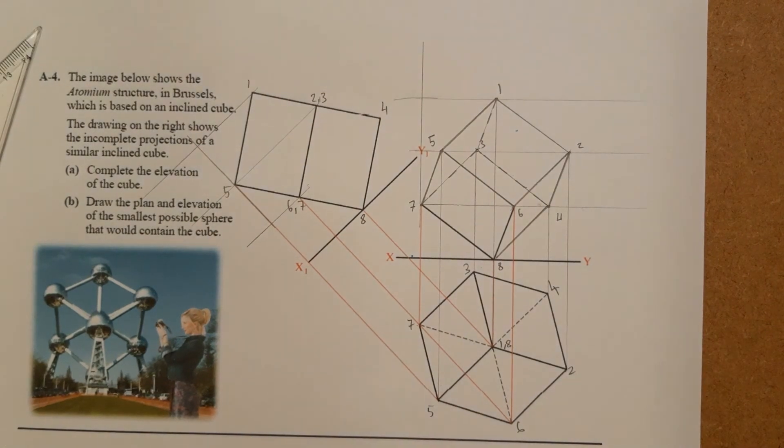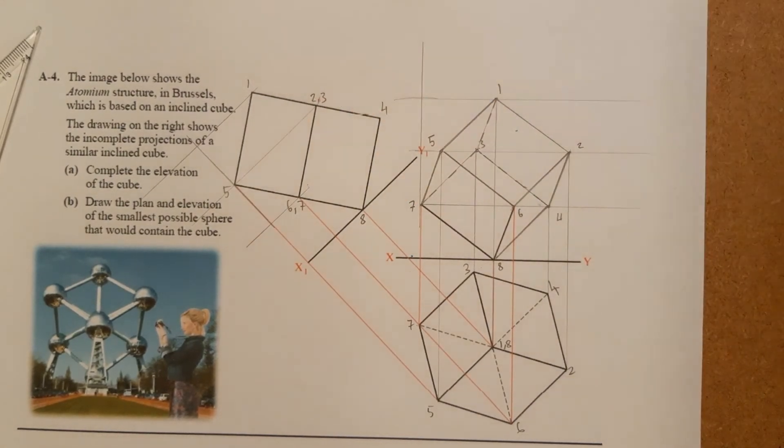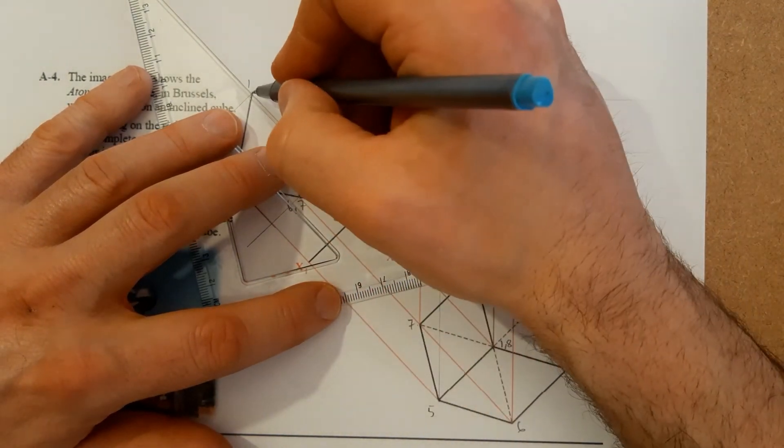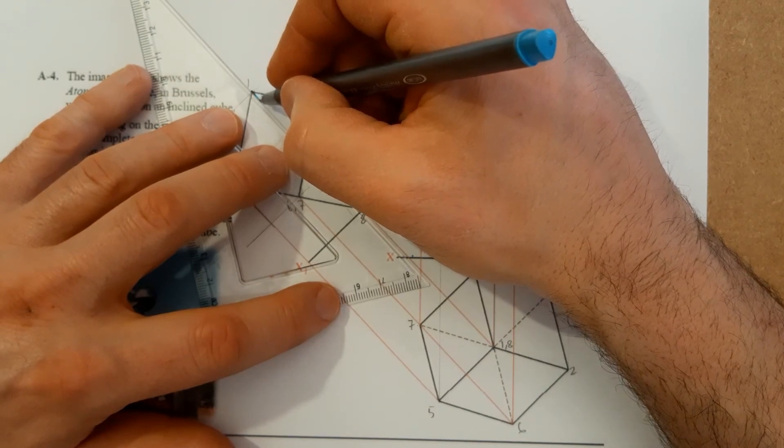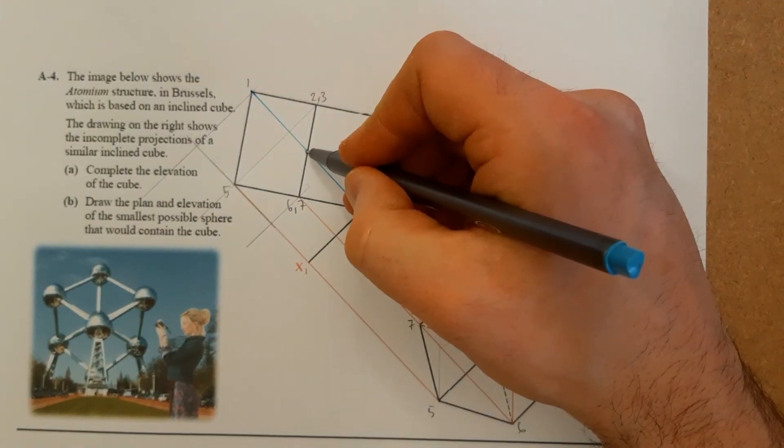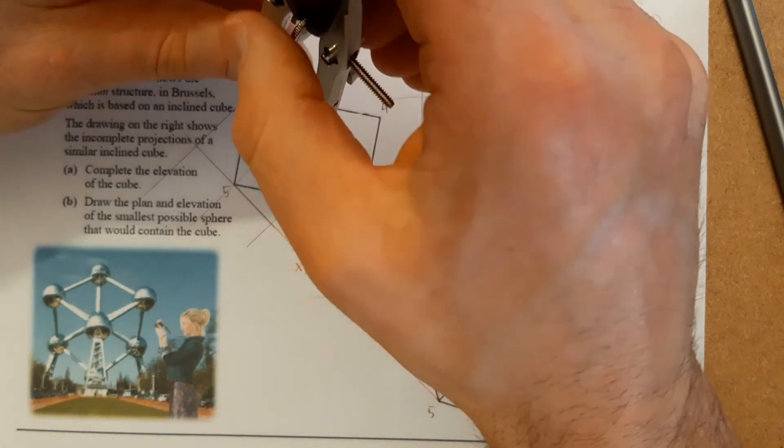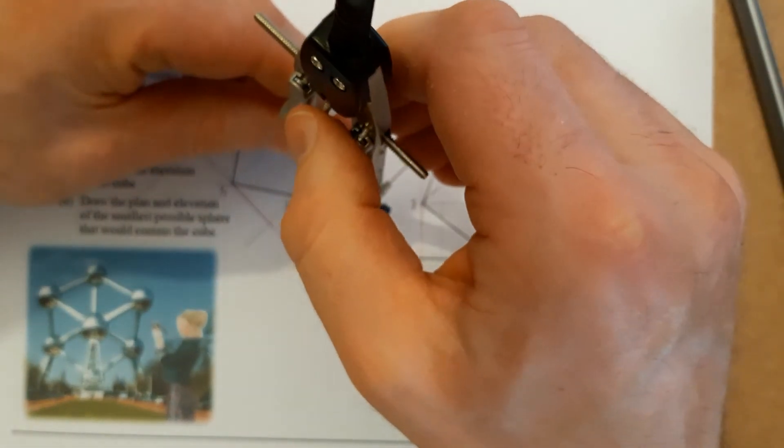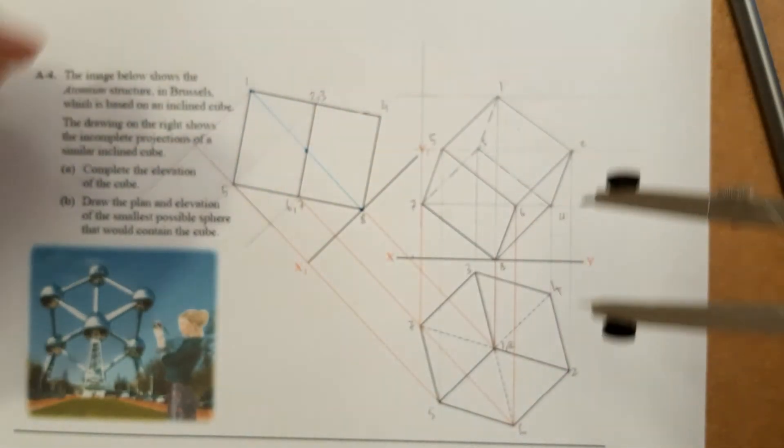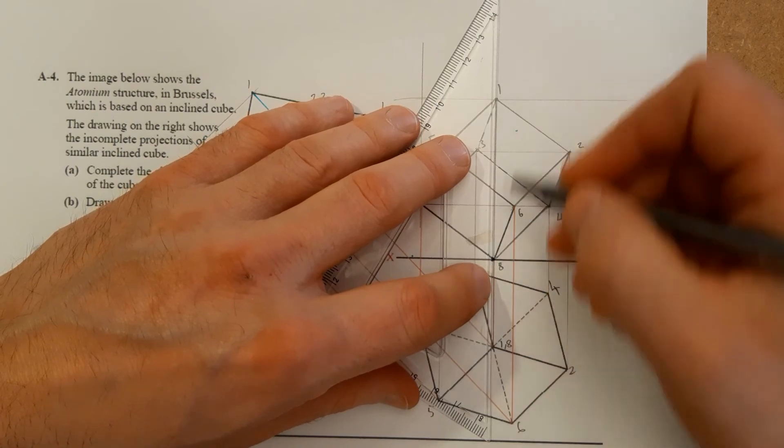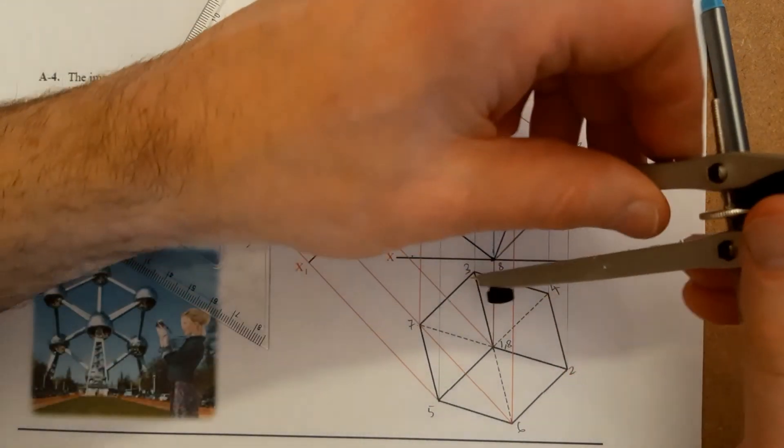And that's what our elevation should look like. So that's part A. Part B then is asking us draw the plan and the elevation of the smallest possible sphere that would contain the cube. In fifth year you would have done something like this, so we would have joined the two most furthest diagonals away from each other. That would be the longest possible length. If we have those, which is actually you could bisect it but it's actually right there, you could then go and step that off with a compass there.